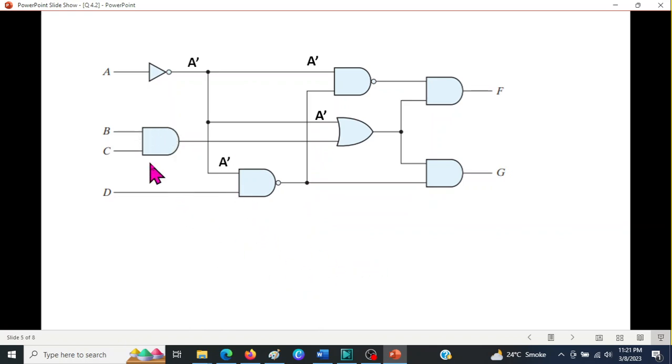Next, we'll solve this gate, the input gate. It's a simple AND gate with B and C. The output will be B·C or simply we can write it as BC. And this BC comes up to this point.